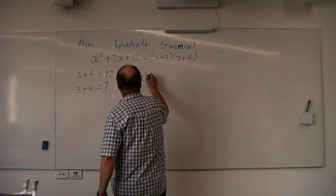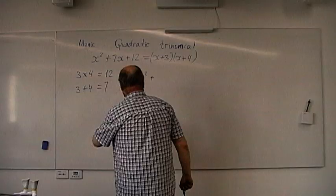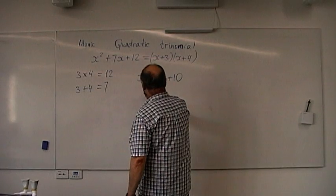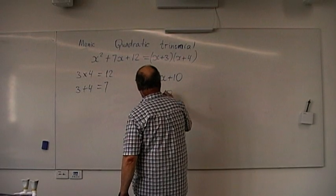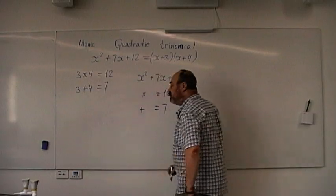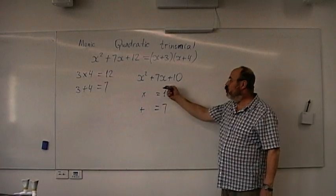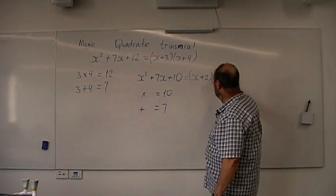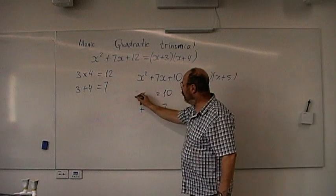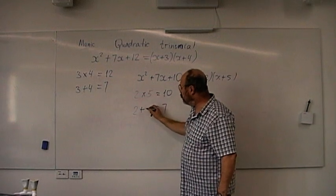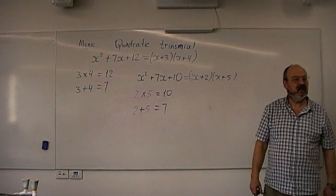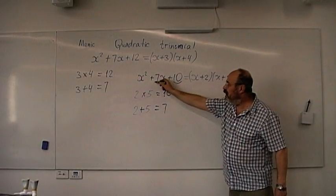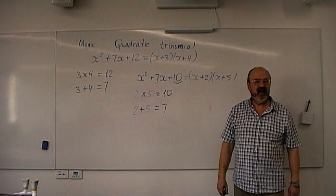Another example: x squared plus 7x plus 10. Which two numbers multiply to 10 and add up to 7? That's 2 and 5, because 2 times 5 equals 10 and 2 plus 5 equals 7. So this factorizes to x plus 2 times x plus 5. They multiply to the constant term and add to the coefficient in front of x.